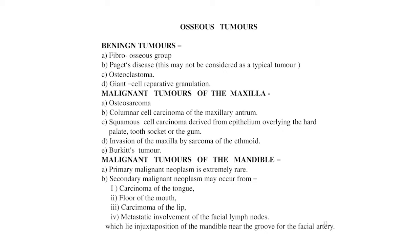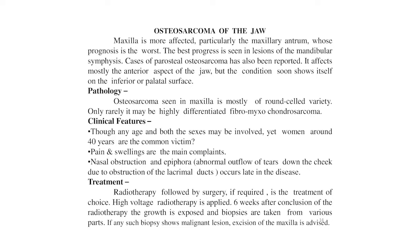Malignant tumors of the mandible: primary malignant neoplasm is extremely rare. Secondary malignant neoplasm may occur from carcinoma of the tongue, floor of the mouth, carcinoma of the lip, or metastatic involvement of the facial lymph nodes which lie in juxtaposition to the mandible near the groove for the facial artery.